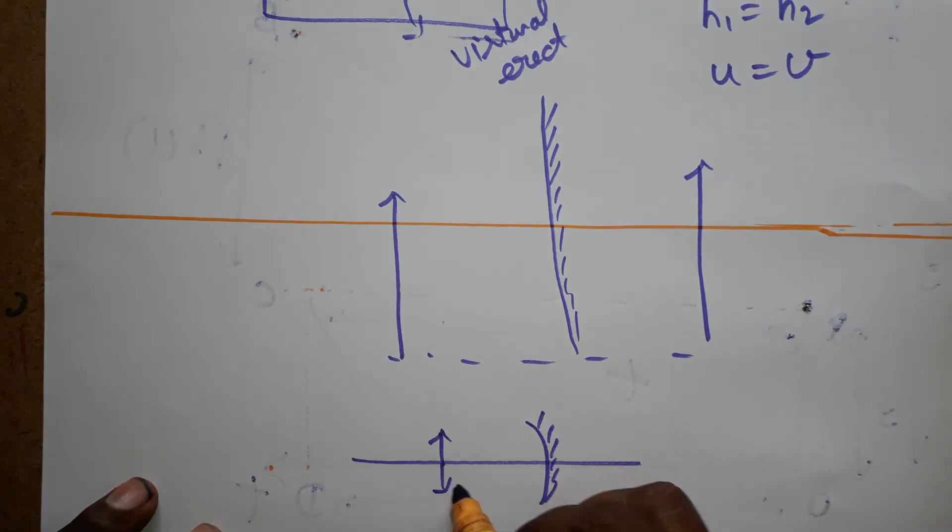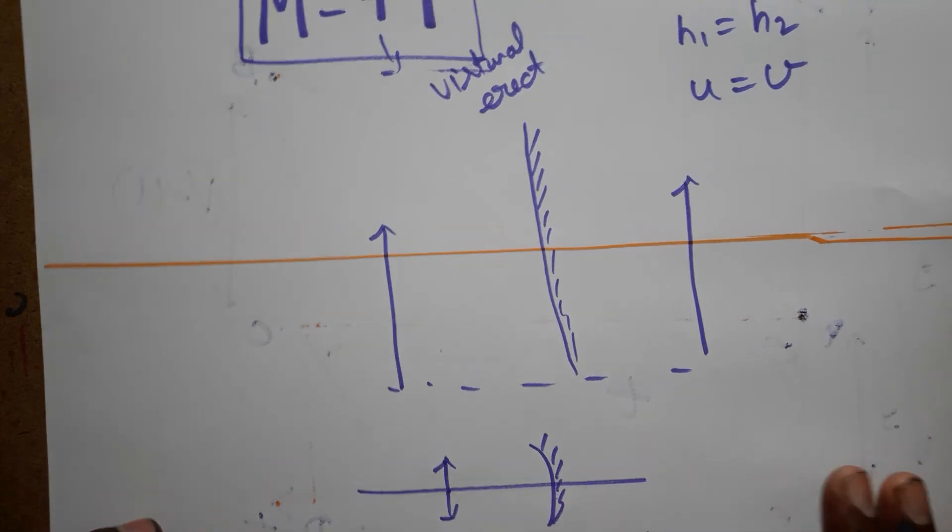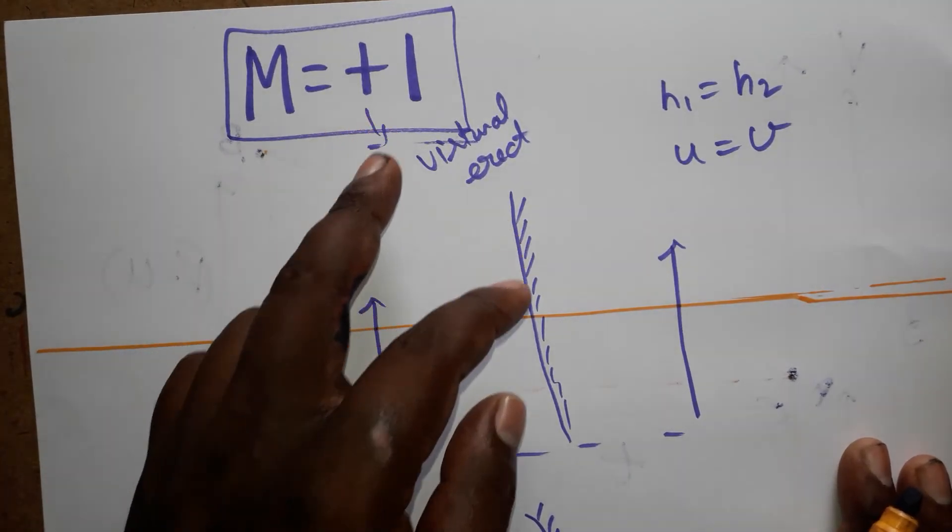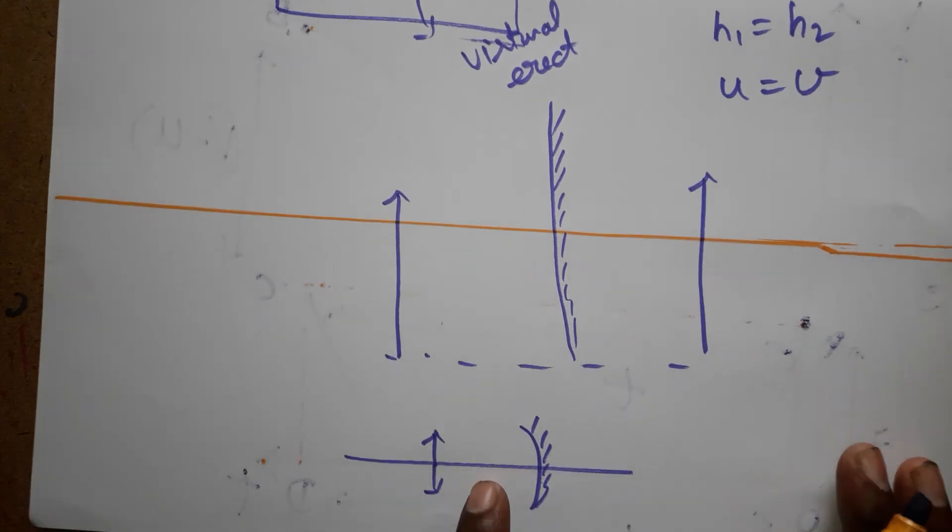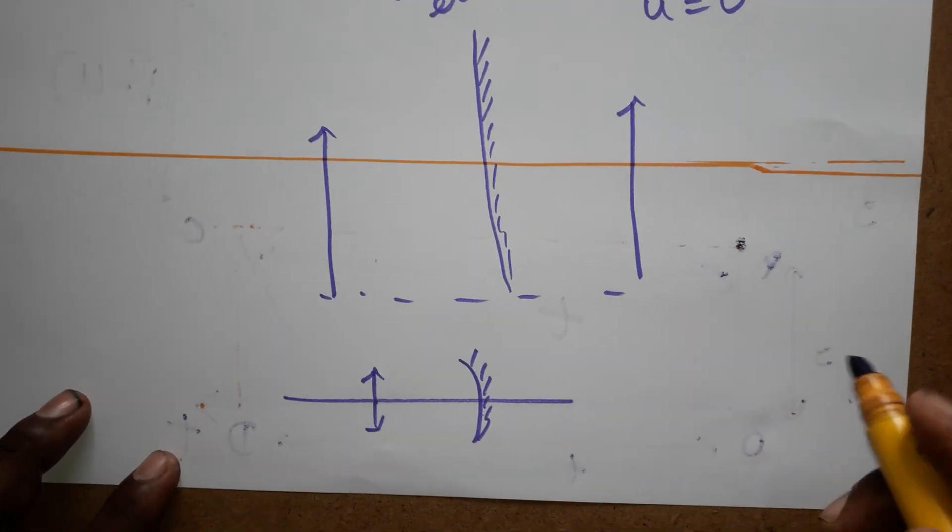Concave mirror when we are placing at 2f, the image will be inverted, will get as a negative one. So the same equation M is equal to minus one means you can use a concave mirror. The another possibility is the convex lens.